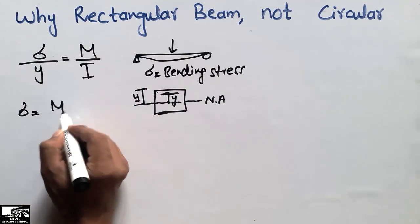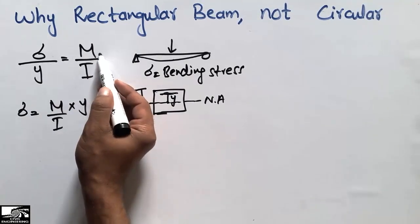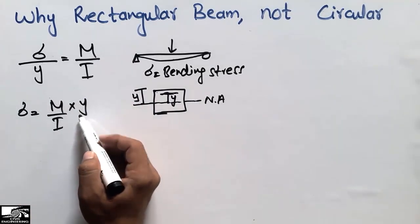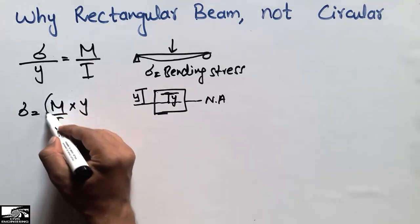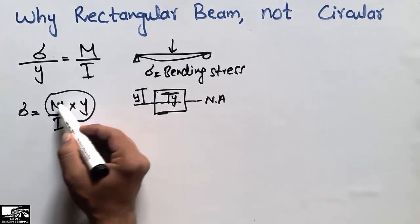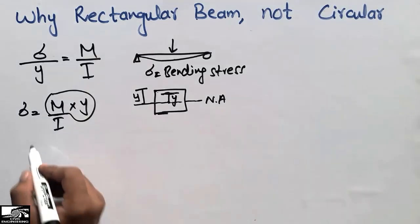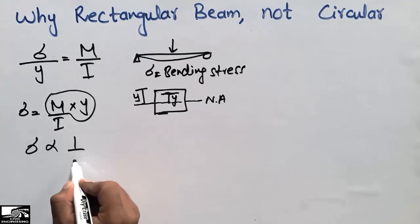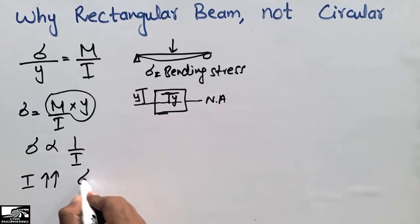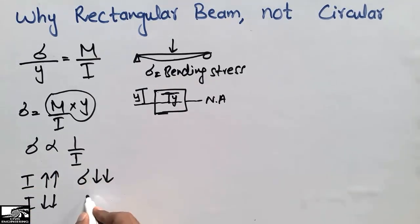We can simplify the equation to: σ = (M/I) × Y. Now, if the bending moment M and distance Y are constant for any given beam, the bending stress σ is in an inverse relationship with the moment of inertia I. This means the higher the moment of inertia, the lower the bending stress; and the lower the moment of inertia, the higher the bending stress.